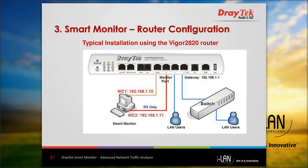This shows a typical installation using a Vigor 2820, which requires two connections, but later model routers such as the 2830 and 2860 only require a single connection. I'll play the video now which gives you all of this in more detail and should be easier to understand.